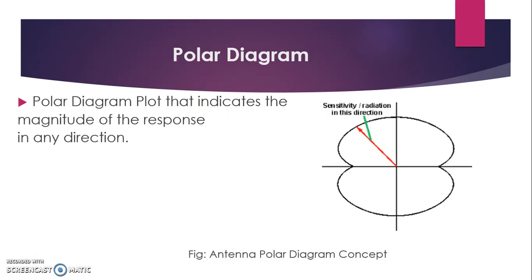This is the polar diagram of the folded dipole. As you can see here, the polar diagram plot indicates the magnitude of the response in any direction, as mentioned in the diagram. The loop shown indicates where the sensitivity and radiation is directed.